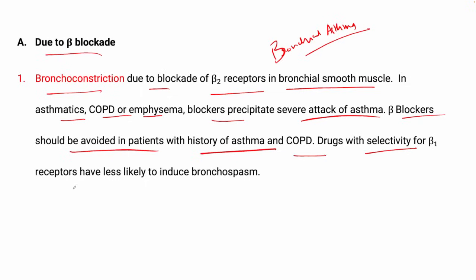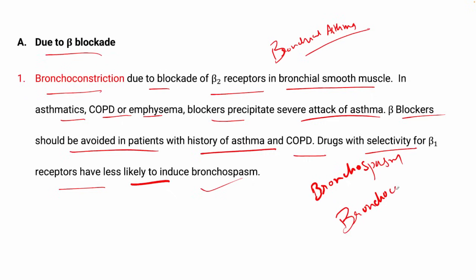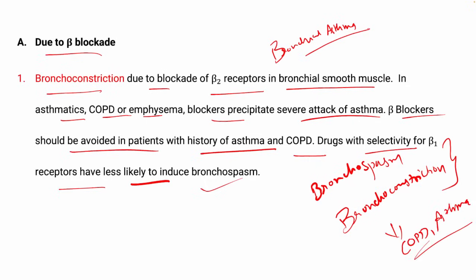Drugs with selectivity for beta-1 receptors are less likely to induce bronchospasm. Bronchoconstriction and bronchospasm are ideal adverse effects to watch for, so you have to take care with COPD, asthma, and status asthmaticus patients.